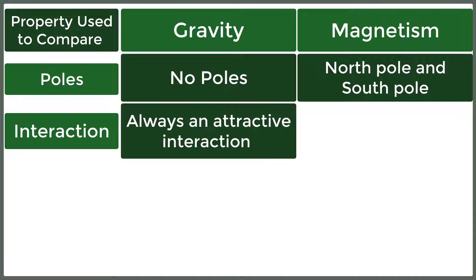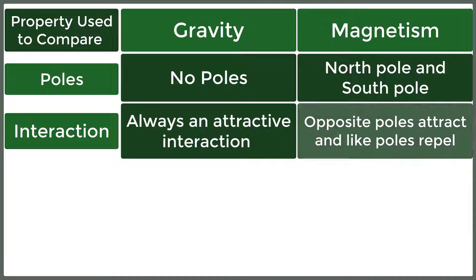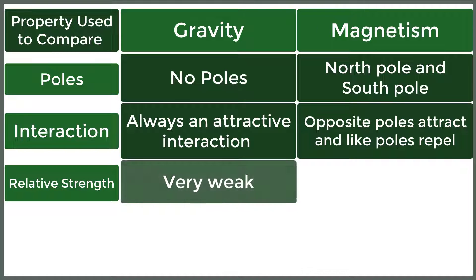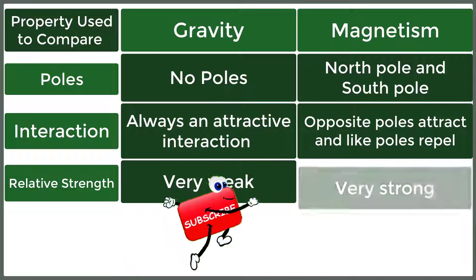Interaction: Always an attractive interaction in gravity, whereas in magnetism, opposite poles attract and like poles repel. Relative strength: Gravity is very weak, whereas magnetism is very strong.